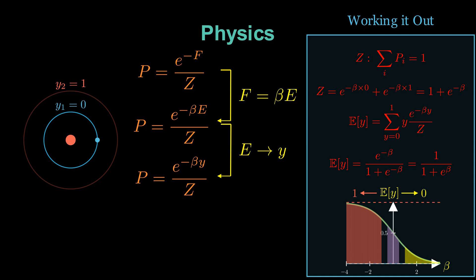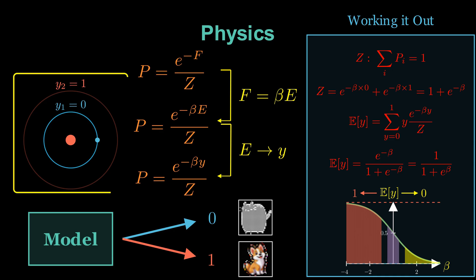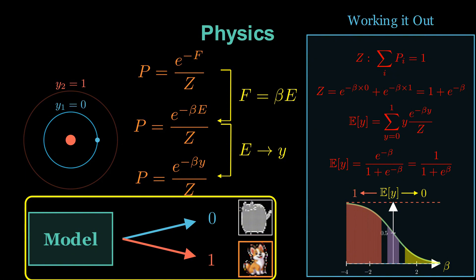Now here's the connection. In machine learning, the expected value of Y is the model's prediction. If a mathematical model can predict zero when the condition looks like a cat and predict one when the condition looks like a dog, that model will be a machine learning classifier. So this simple quantum system, with an electron flipping between two states based on energy and temperature, is doing exactly what a logistic regression model does, flipping between two classes based on the temperature of the heat lamp, which plays the role of the pixel values of images in the machine learning problem.